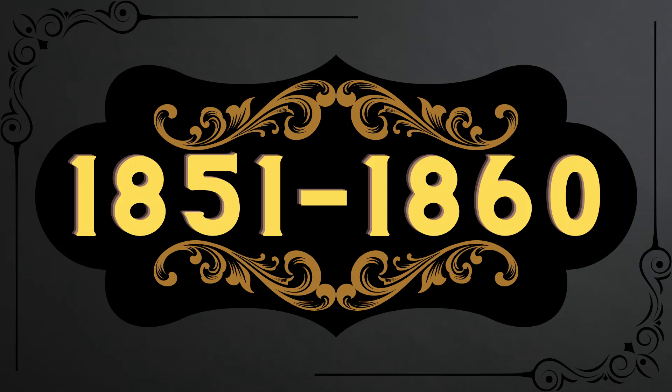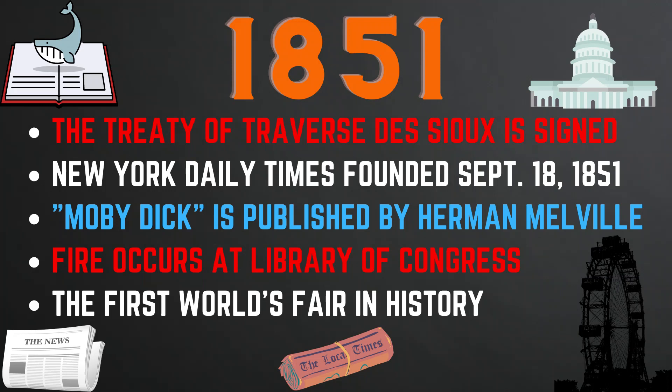Now we will look at some of the history and key events in the 1850s, from 1851 to 1860. In 1851, the Treaty of Traverse des Sioux was signed, by which the Sisseton and Wahpeton Dakota tribes sold 21 million acres of land in Iowa, Minnesota, and South Dakota to the U.S. for a little over $1.6 million. The New York Daily Times — the original name for the New York Times — was founded September 18, 1851. The famous book Moby-Dick was published by Herman Melville on November 14, 1851. A fire occurred at the Library of Congress on December 24th, 1851, destroying about 35,000 books.